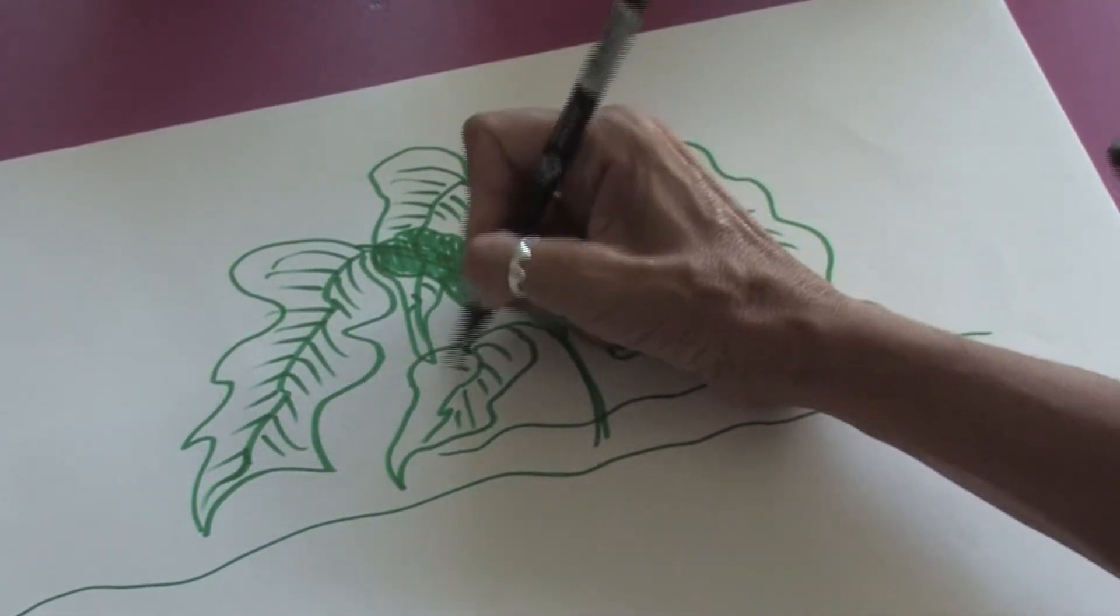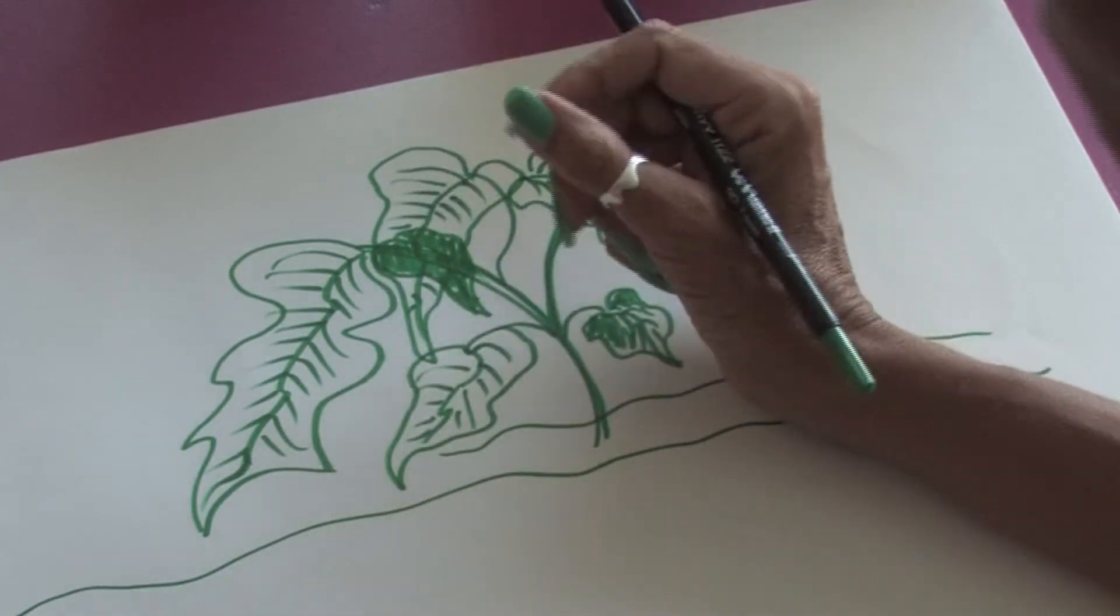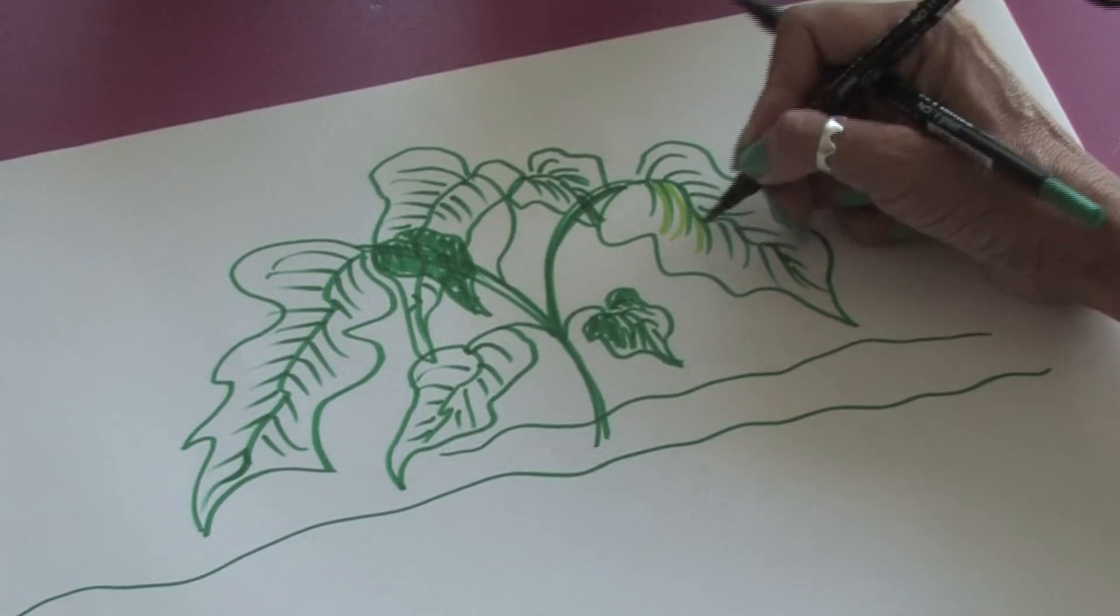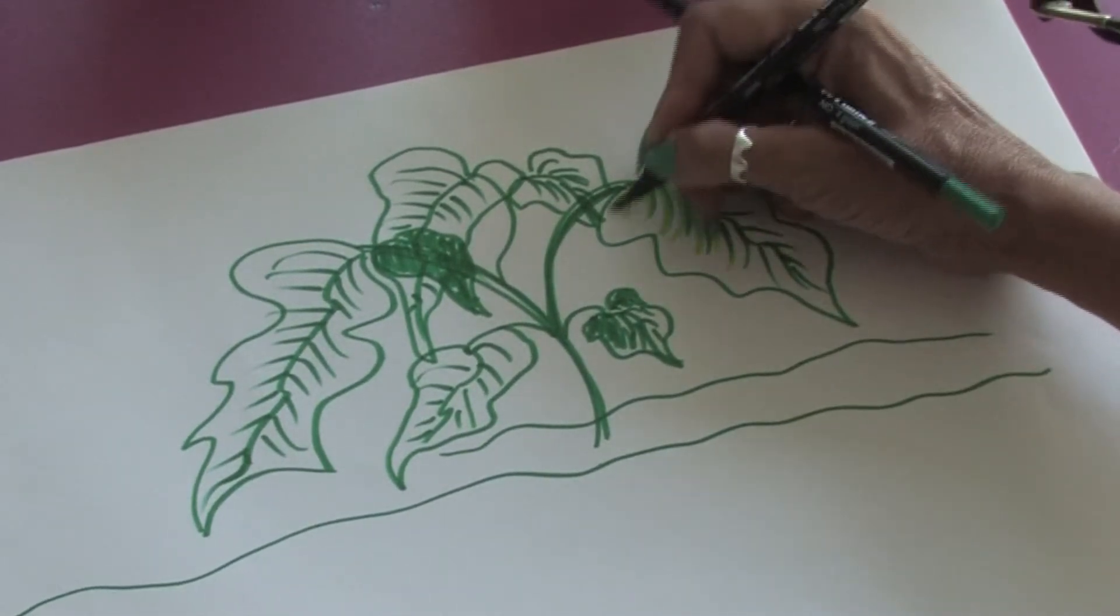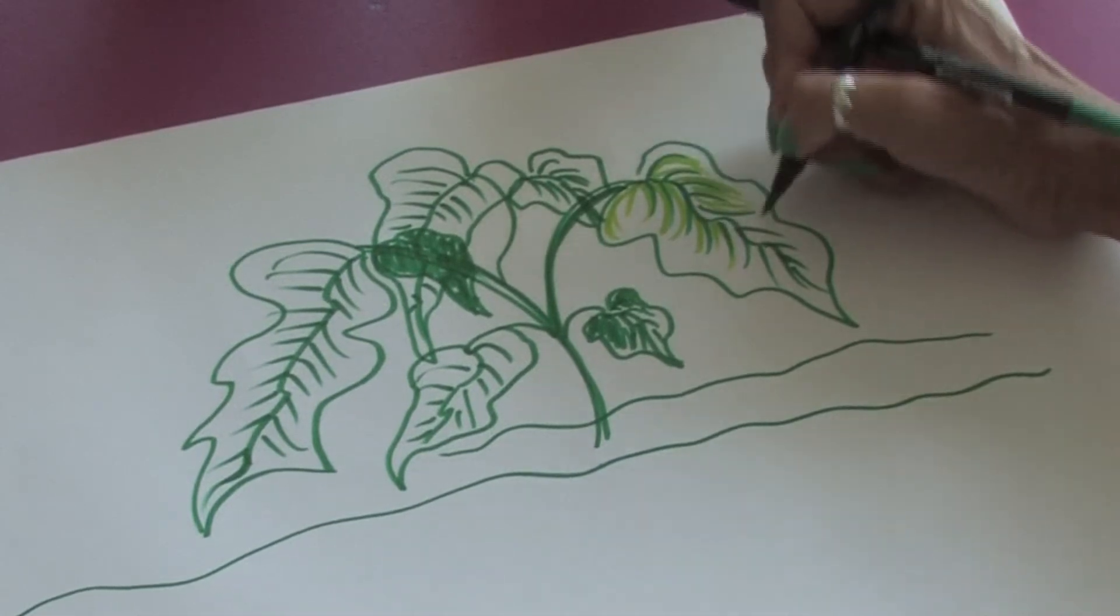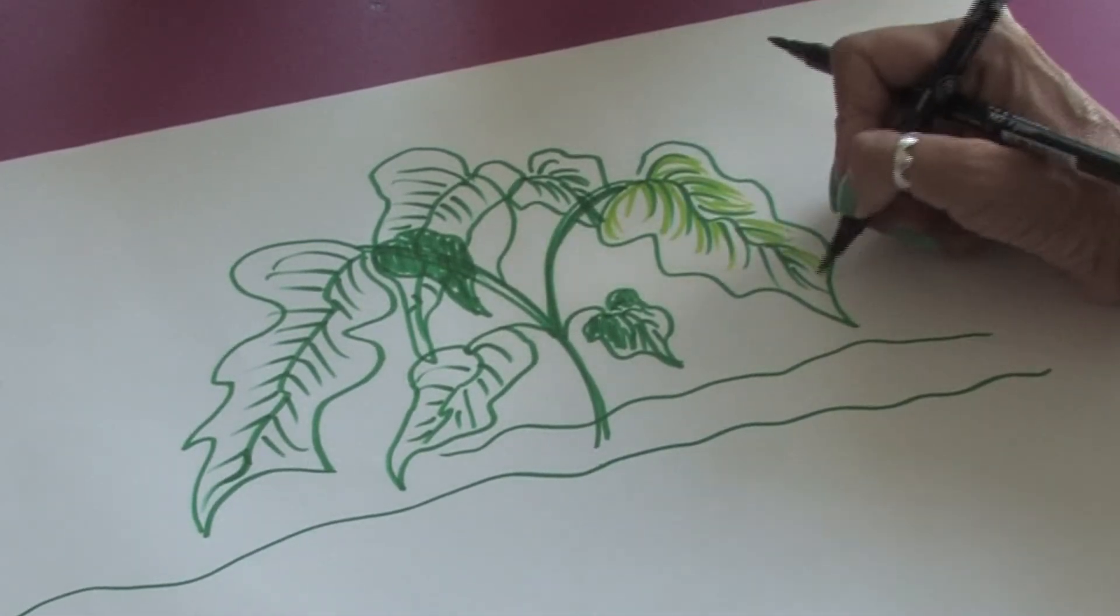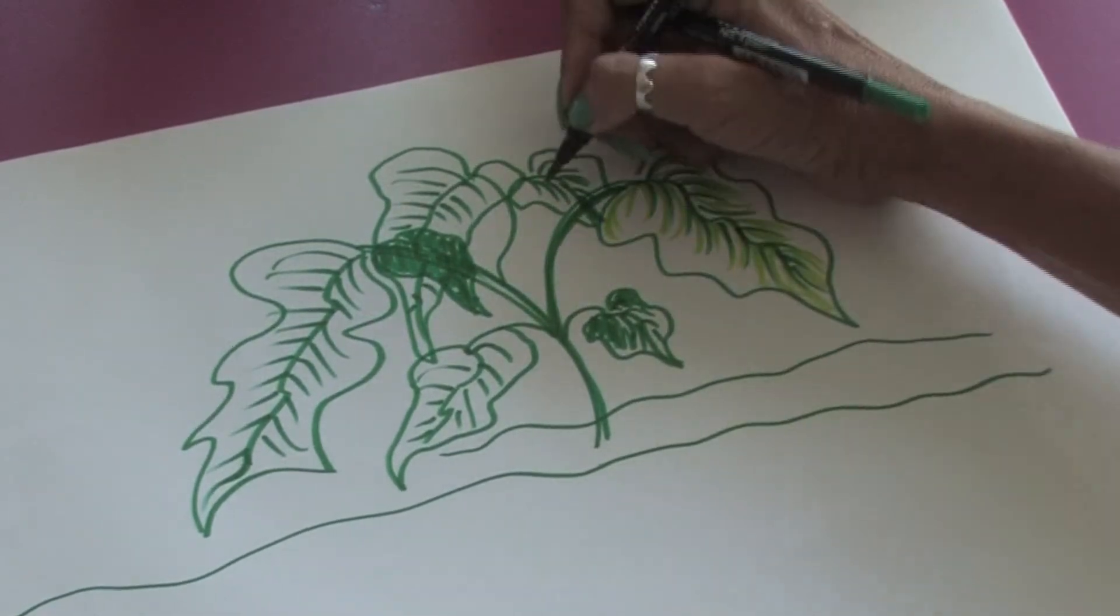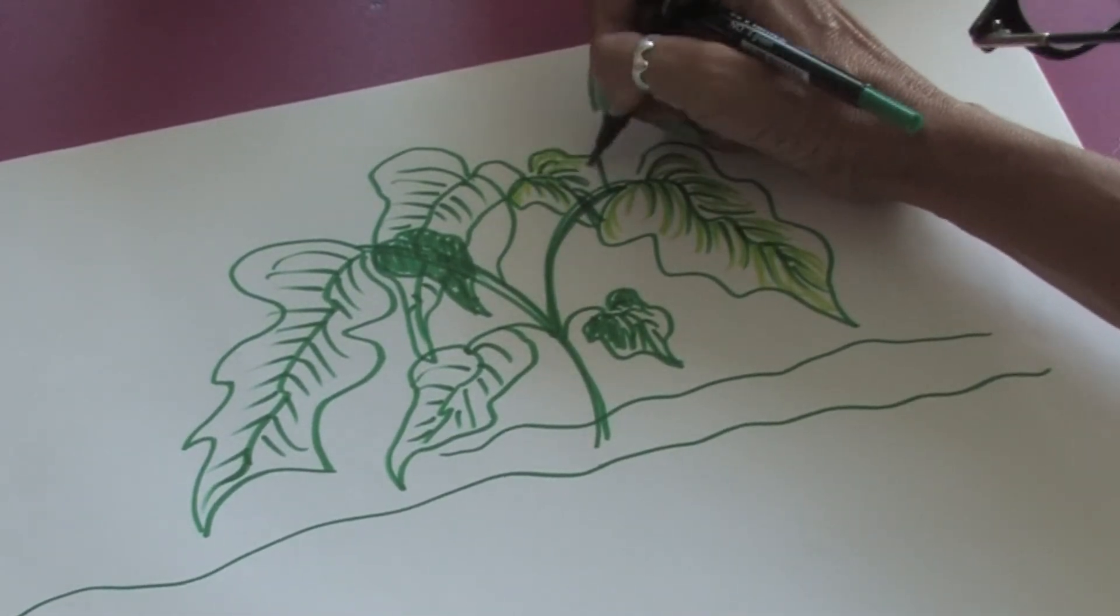And once you have your main outlines, you can take a lighter color green marker and just start highlighting the leaves just like so. So that it gives it a little bit more dimension. And we'll just keep going and highlighting the leaves.